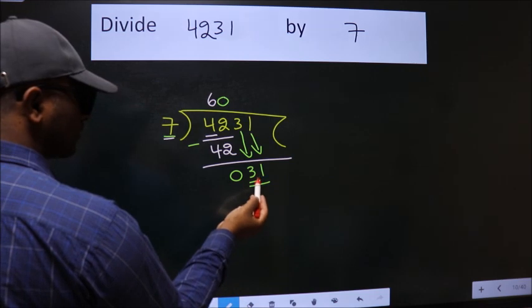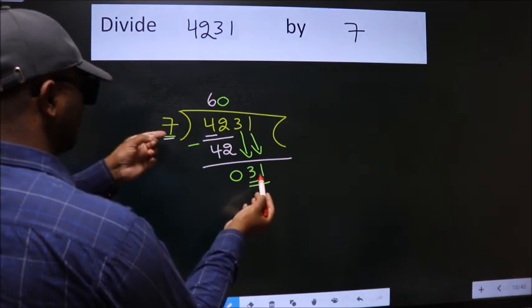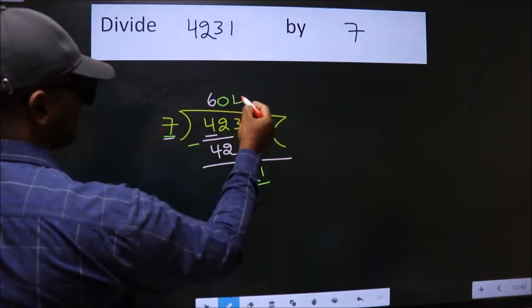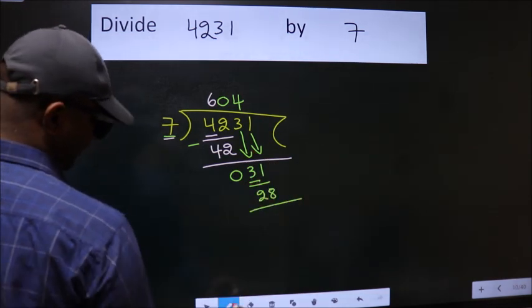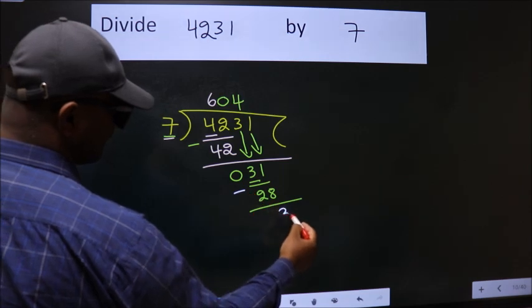So, 31. A number close to 31 in the 7 table is 7 times 4, 28. Now, we subtract. We get 3.